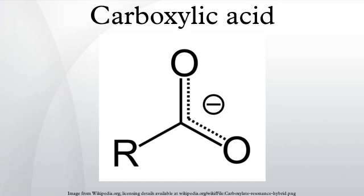To more easily understand the reactions involving carboxylic acids, it can be helpful to notice that the carboxyl group itself is a hydroxylated carbonyl group, meaning that two of the carbon atom's four bonds are to an oxygen atom, the carbon atom's third bond is to a second oxygen atom, and the carbon atom's fourth bond attaches to R. A carbon atom double bonded to an oxygen atom is a carbonyl group, and two of the carbon atom's bonds remain available for bonding.